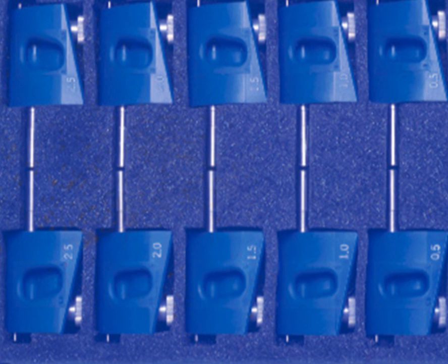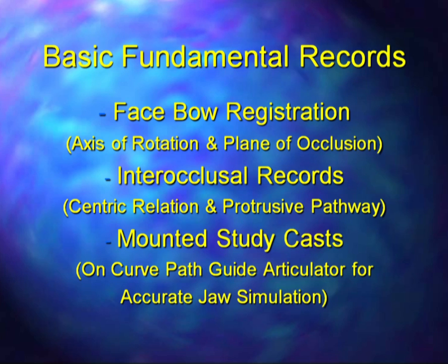Analogs come in five different sizes from 0.5 to 2.5 in half-millimeter increments. Some basic fundamental records should then include a face bow registration, so we can get a relationship to the axis of rotation as well as the steepness of the plane of occlusion. The interocclusal records will give us a centric relation position as well as the protrusive pathway and the discluding factor. Then mounting the cast on a curved path guide articulator for a more accurate jaw simulation.